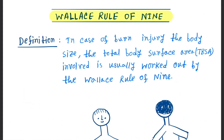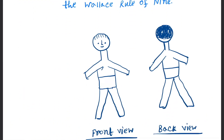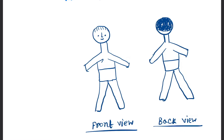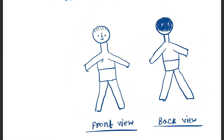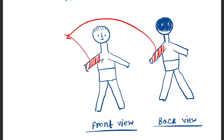Now let's see these things in the diagram. Here you can see two views — the frontal view and the back view. First, each upper limb is nine percent of the body surface area. You can see the upper limb here, and it also contains the back of the upper limb, so these two are nine percent.